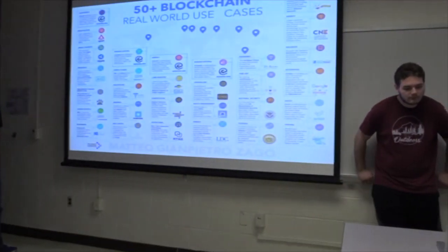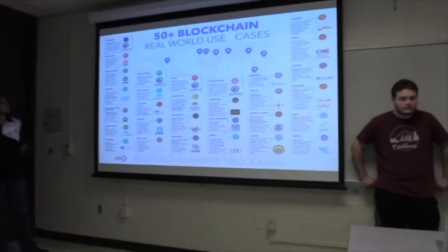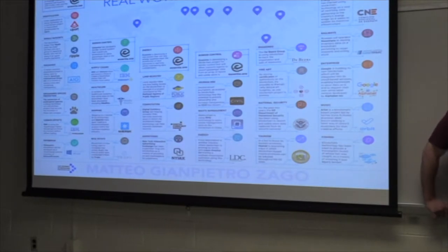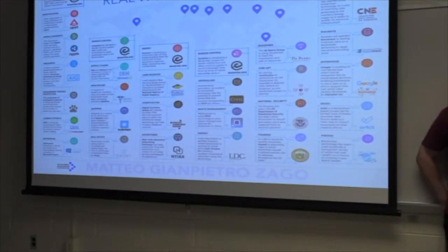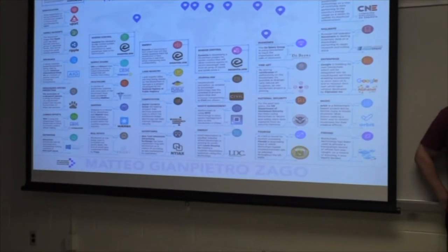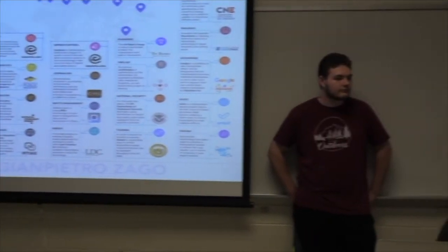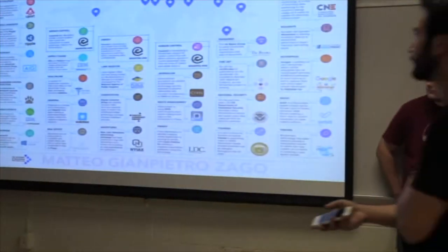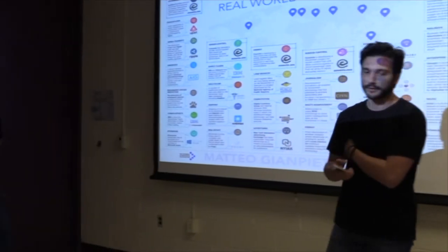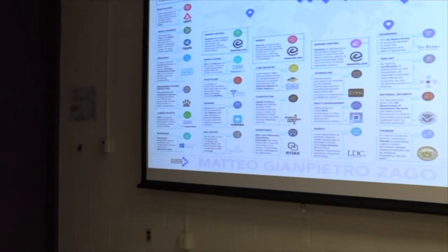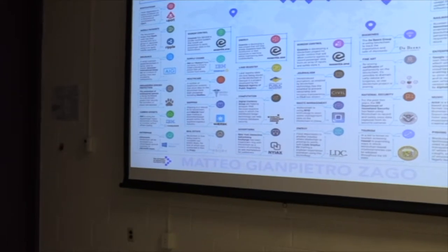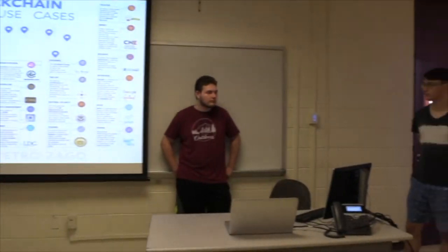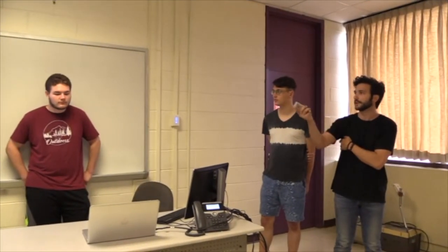Here are the real-world use cases — many companies are actually trying to implement the blockchain data structure in their business. IBM, for example, has implemented blockchain on Walmart as a supply chain example. Another example could be AIG.